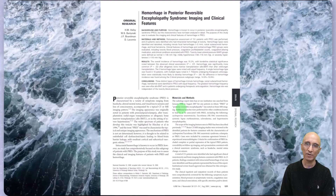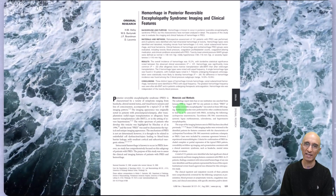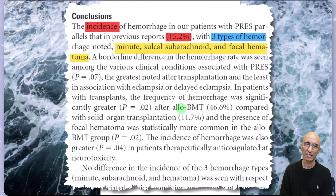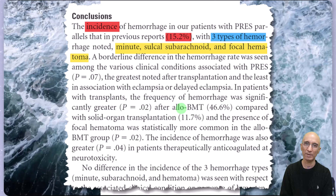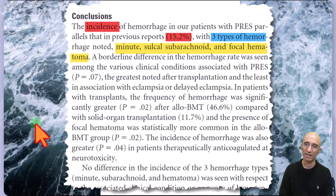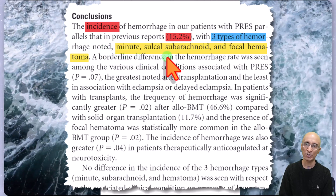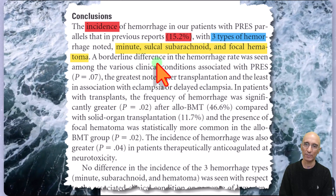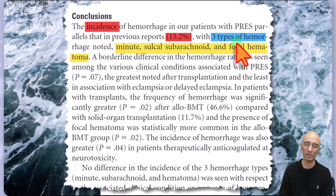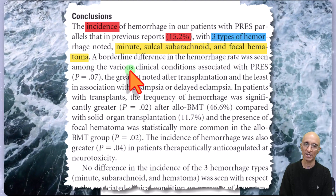In terms of hemorrhage in the setting of PRES, one article analyzed the incidence and etiology and found that hemorrhage can be seen in up to 15% of patients with PRES. They identified three types of hemorrhages: minute or sulcal subarachnoid hemorrhage, as seen in our patient at presentation, and focal hematoma, as seen in our patient on the follow-up CT head examination.